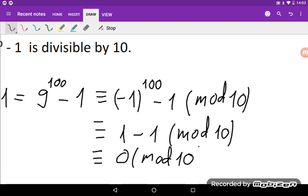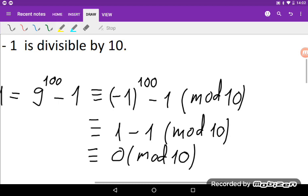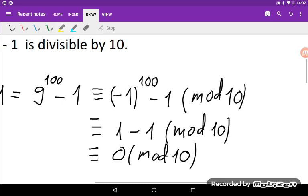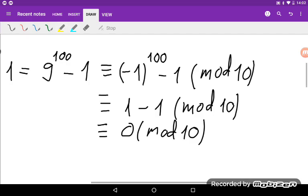So because this initial expression is congruent to 0 mod 10, that means that initial expression is actually divisible by number 10. So that's the first solution.